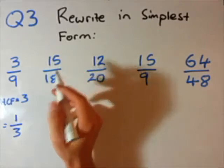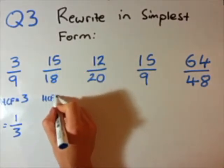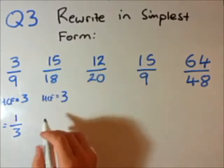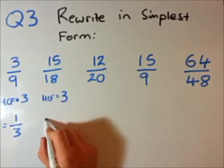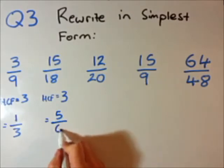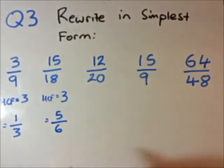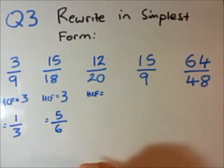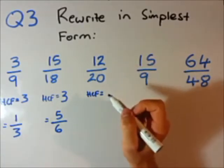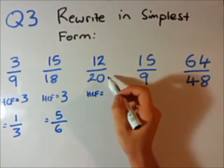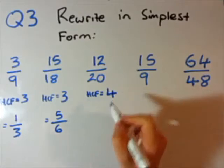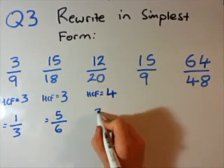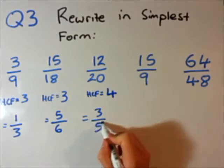Let's go to the second one: 15 over 18. Highest common factor equals 3 again. So now we divide top and bottom by 3. 15 divided by 3 is 5. 18 divided by 3 is 6. Now this is in its simplest form. Let's go to the third one: 12 divided by 20. Highest common factor — I think 4 goes into 12 and 20. 6 doesn't go into 20, so we're good with 4. So highest common factor is 4. 12 divided by 4 is 3. 20 divided by 4 is 5. There you go — simplest form.